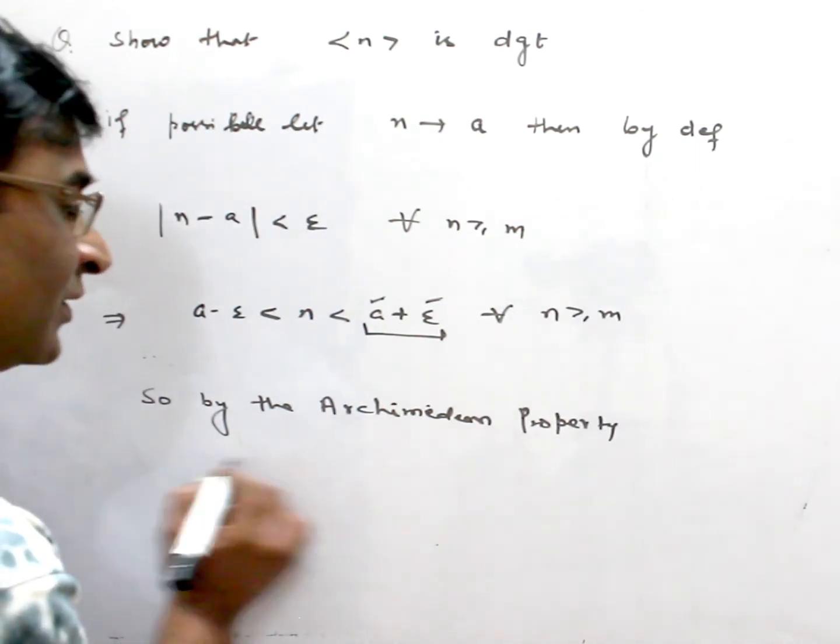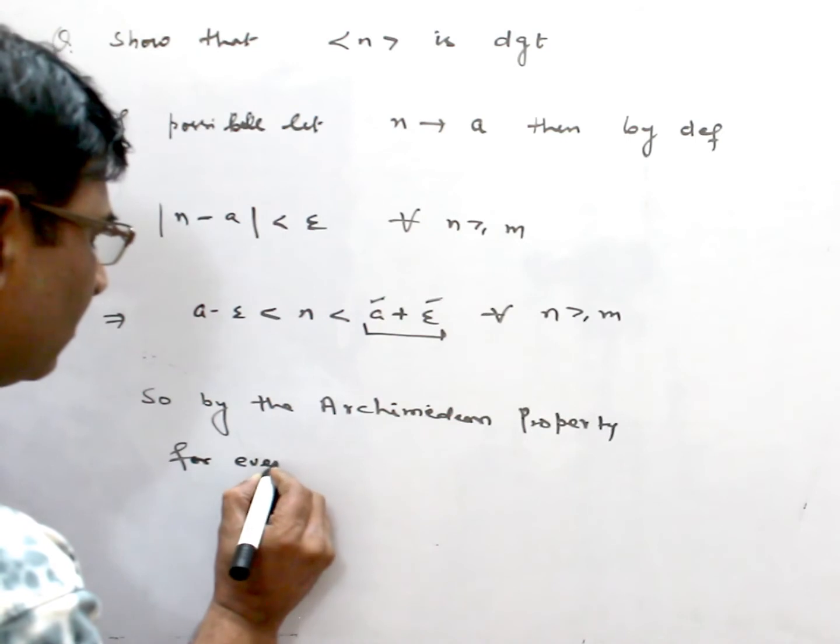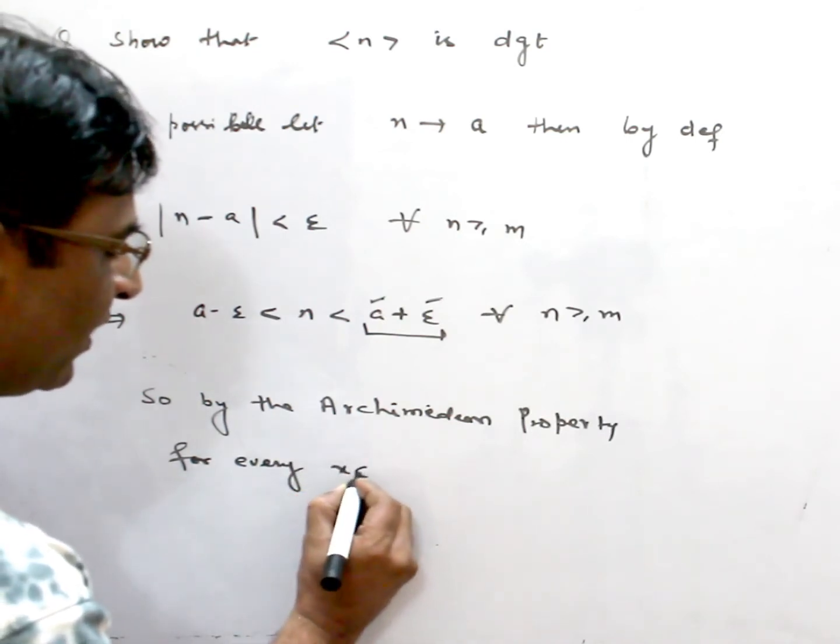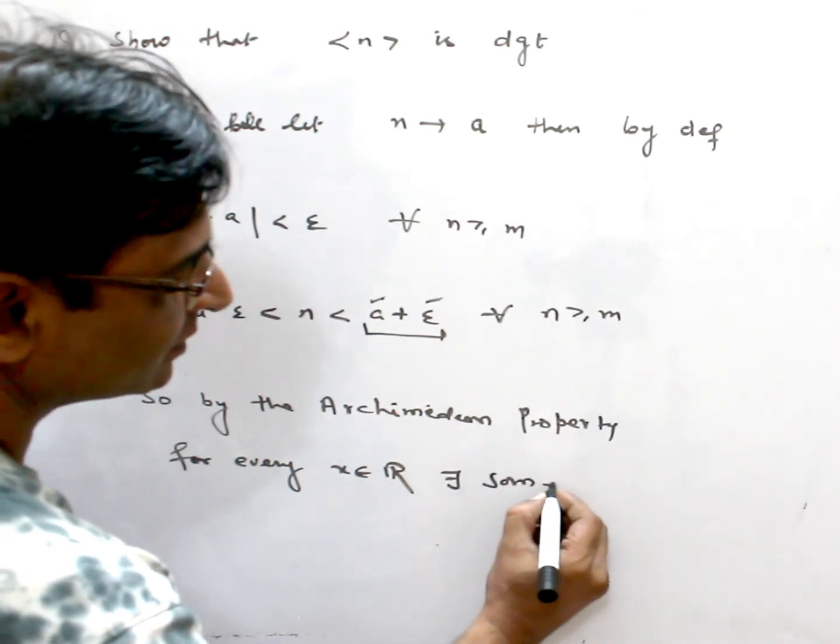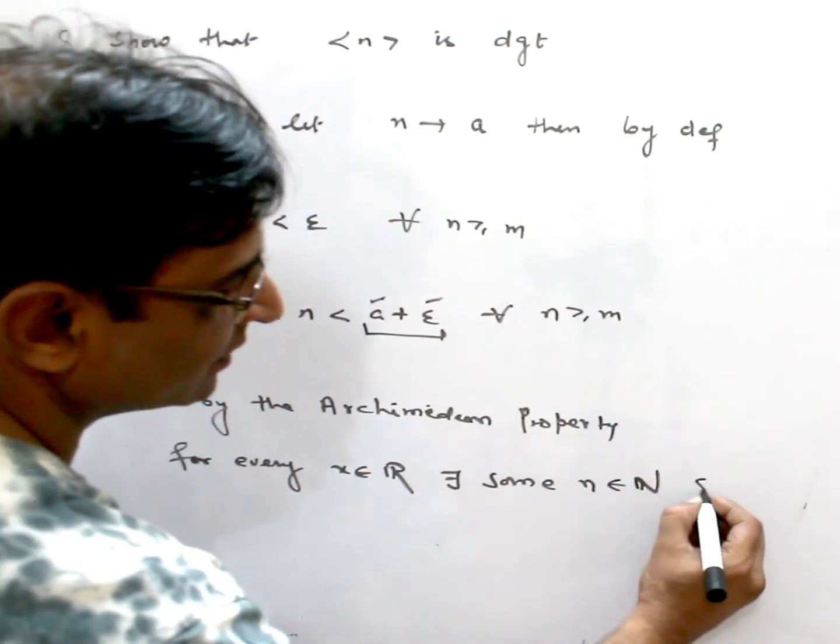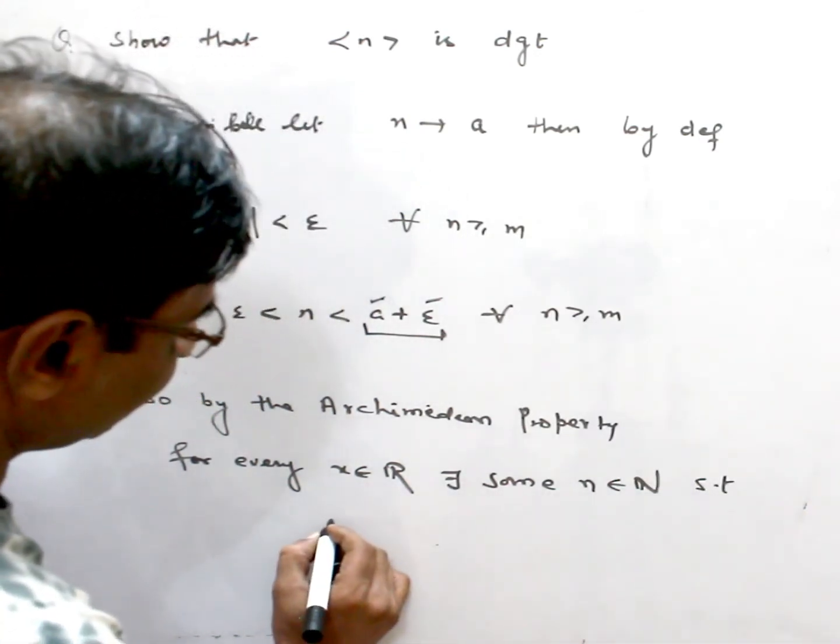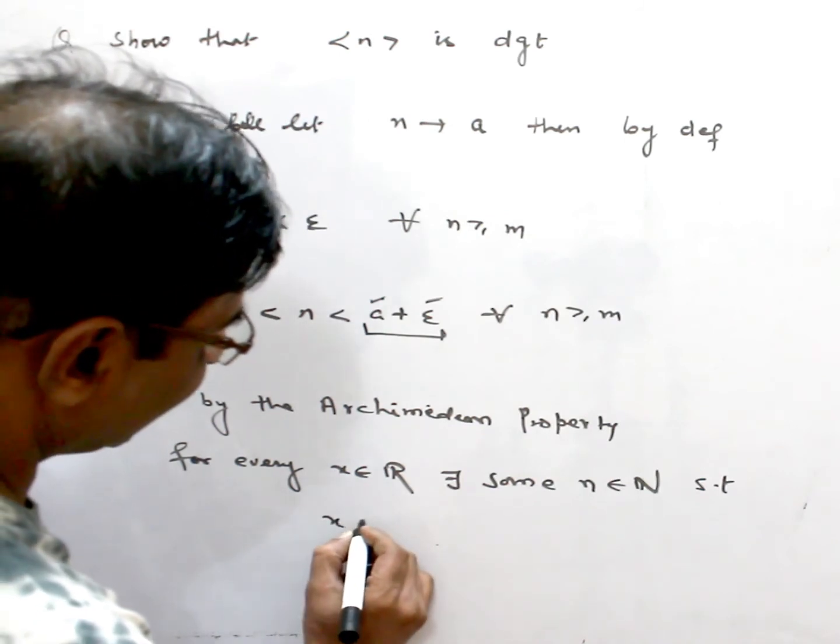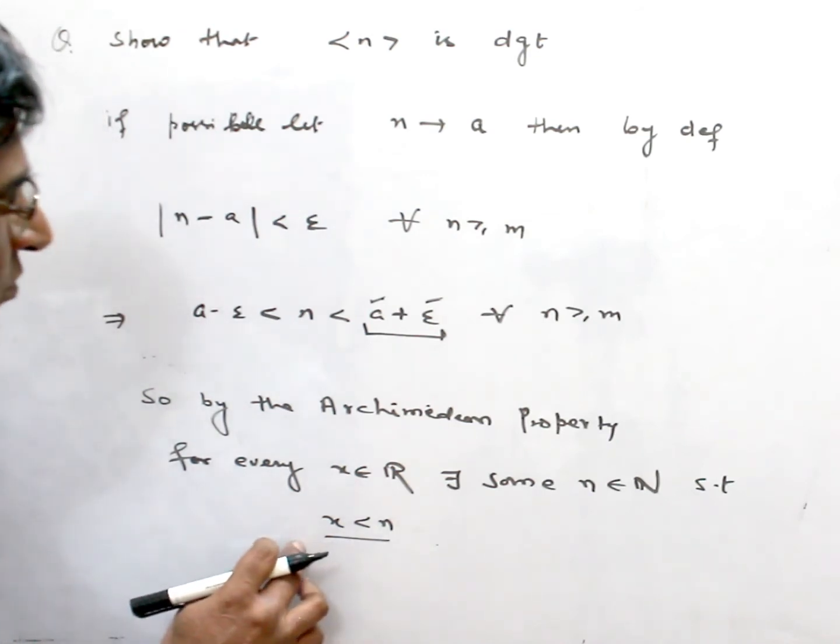For every x belongs to R, there exists some n in N such that x < n. This is the Archimedean property.